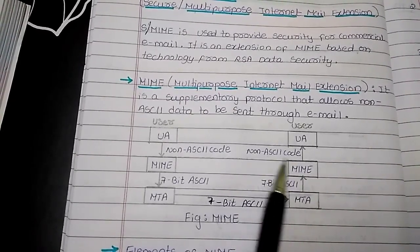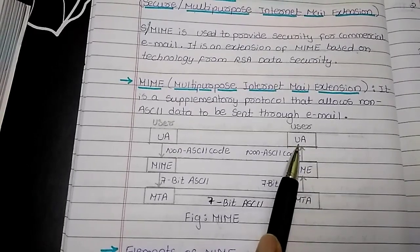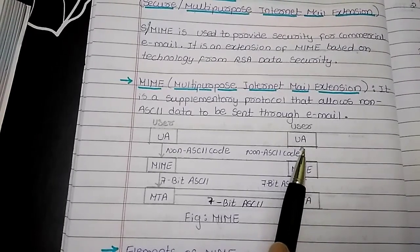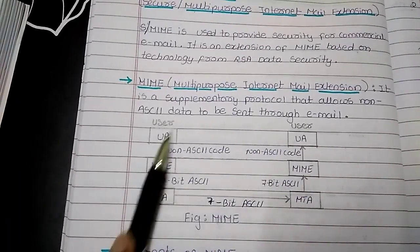So, here that's why I have written non-ASCII code. This non-ASCII code is forwarded to the user agent which gives the message to the user. This is the process of MIME working.